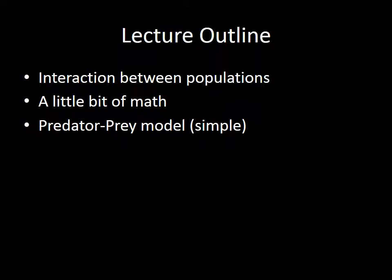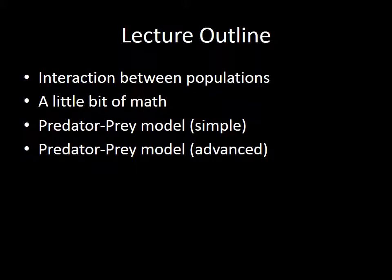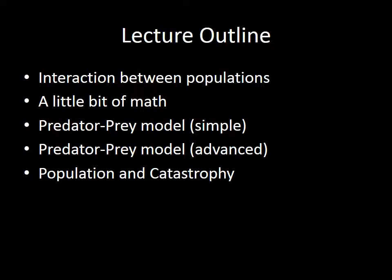We're going to look at a first type of interaction referred to as predator-prey models. I'll do a simple example in predator-prey and then an advanced version of a predator-prey model. We're also going to look at the interaction between population and catastrophes — how a catastrophe affects a population at a given point in time and how that changes the dynamics of the system.